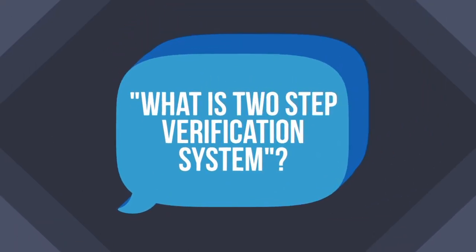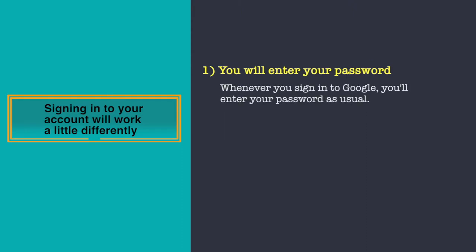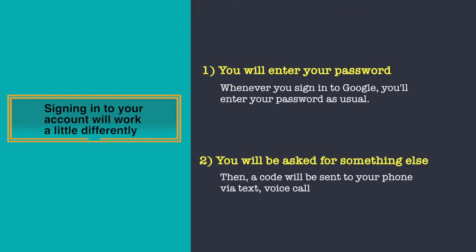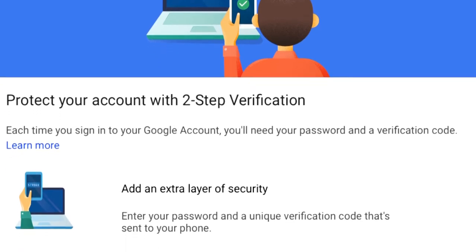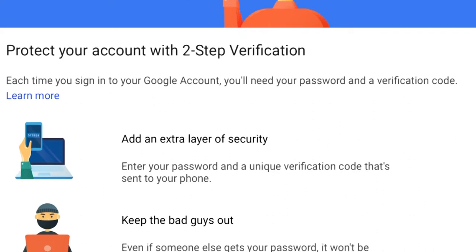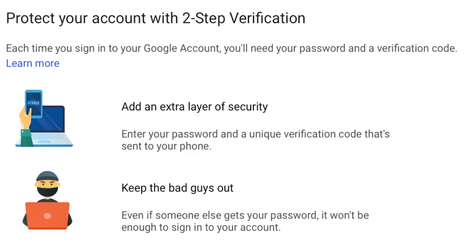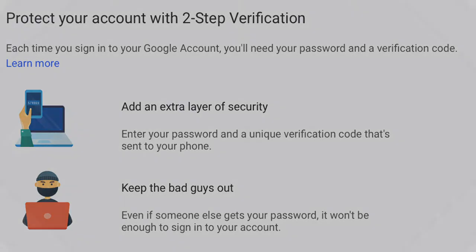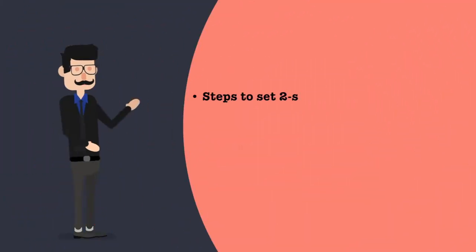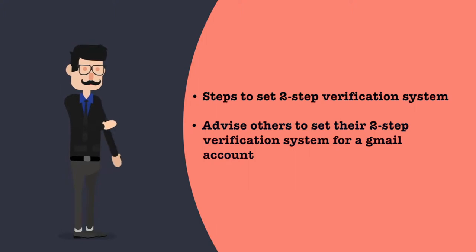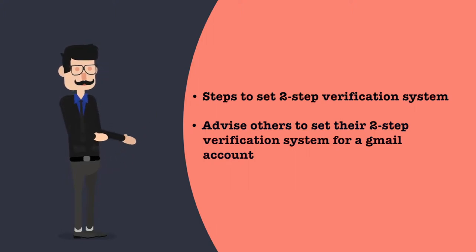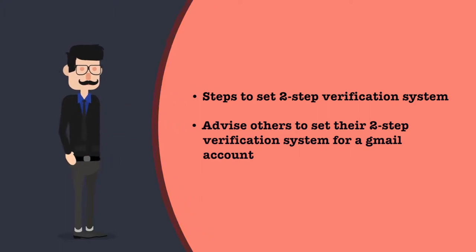In a two-step verification system, any time an unknown device is used to sign into your Google account, the user has to provide a verification code in addition to the password. It's not enough for hackers to just get your password — they will also need physical control of your phone or computer to access your account. This applies to your entire Google account and all services connected with Google.